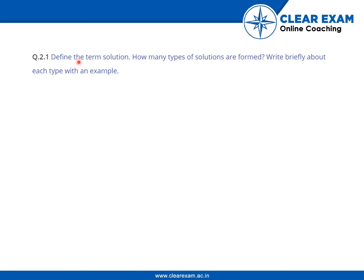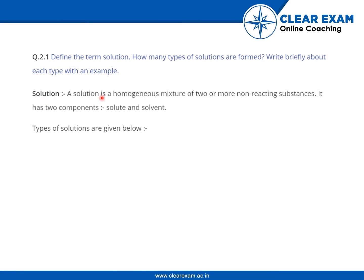You have to define the term solution, how many types of solutions are formed, and basically about each type. A solution is a homogeneous mixture of two or more non-reacting substances. It has two components: solute and solvent. Solvent is the part of a mixture which is present in the majority, and solute is present in the minority.